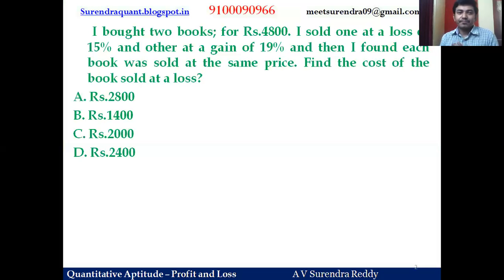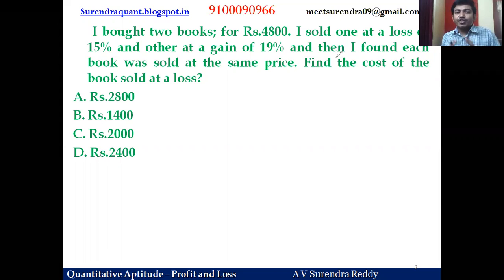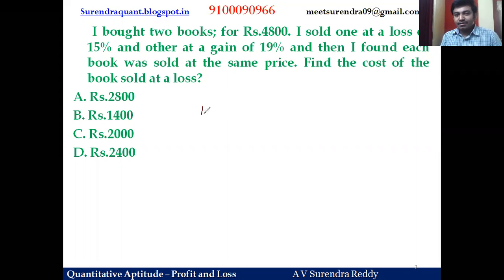The first question: I bought two books worth 4800 rupees. I sold one at a loss of 15 percent and the other at a gain of 19 percent. Each book was sold at the same price. Find the cost of the book sold at a loss.